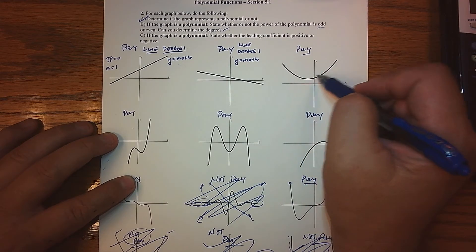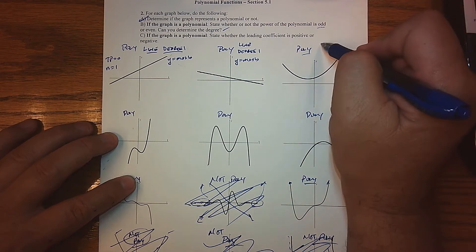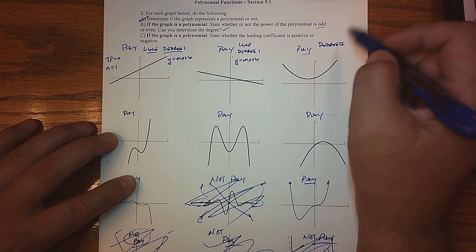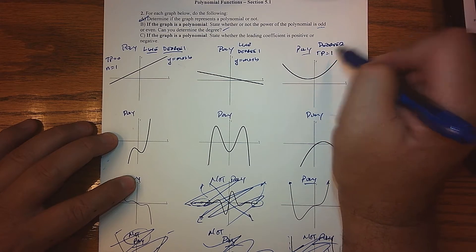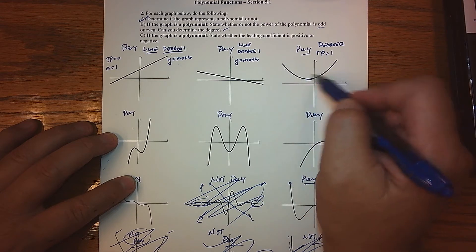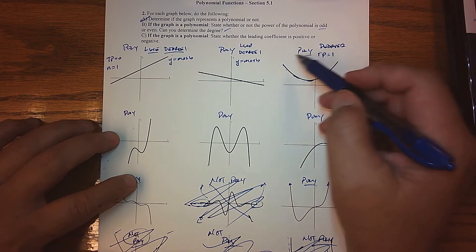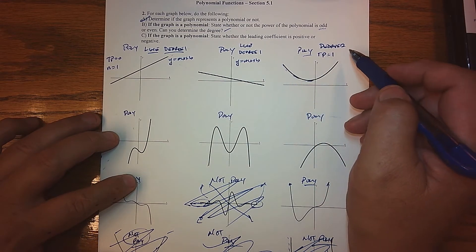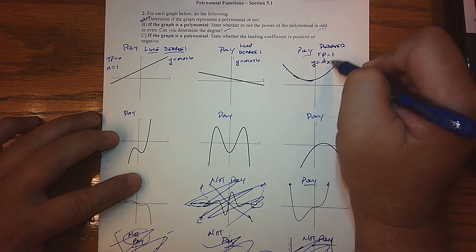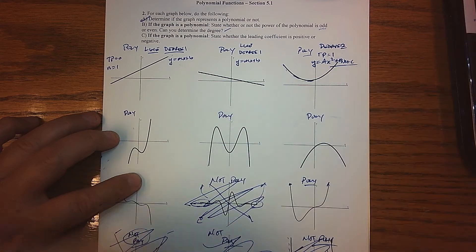The next one, from our previous studies, we know that this is definitely a quadratic function. So this basically means that we are degree two. In terms of our turning points, our TP is supposed to be at least one less than that. And we can see that there is one turning point, where we transition from decreasing to increasing. So everything fits — this is some ax squared plus bx plus c. We know it's a degree two polynomial.